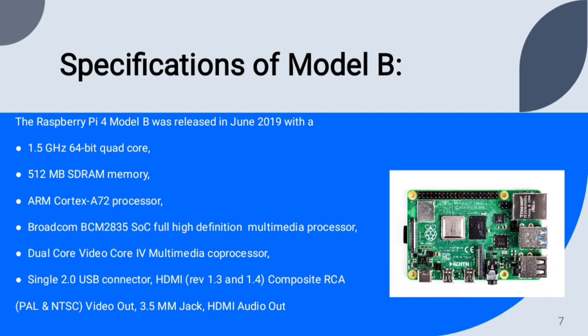Moving on to Raspberry Pi Model B — the Raspberry Pi 4 Model B was released in June 2019. It came with a 1.5 GHz 64-bit quad-core ARM Cortex-A72 processor, 512 MB SD RAM memory, and a Broadcom BCM2835 SoC with a full high-definition multimedia processor and dual-core VideoCore GPU.